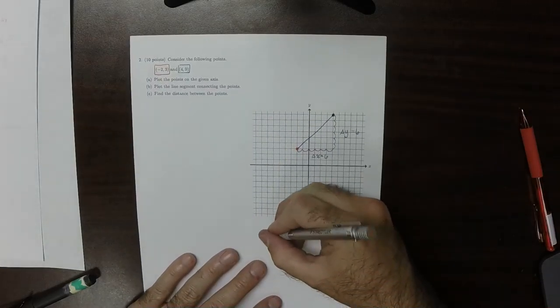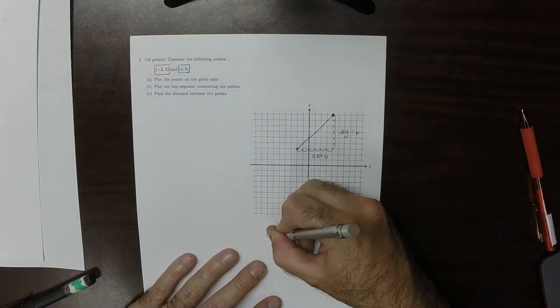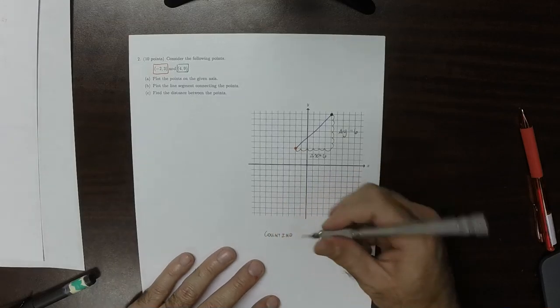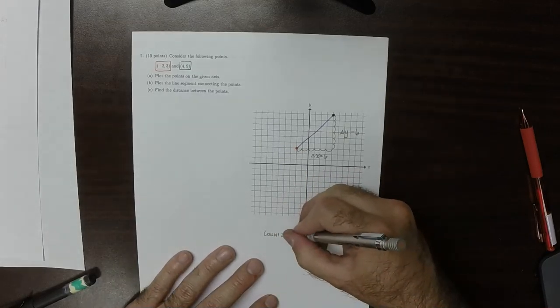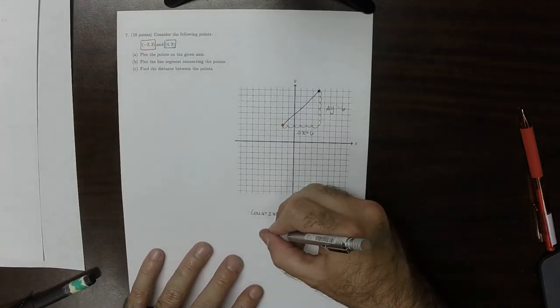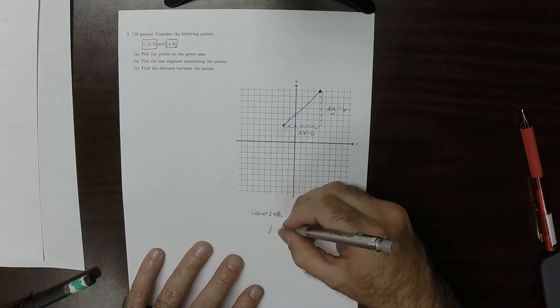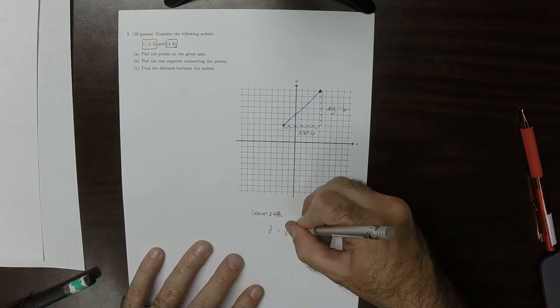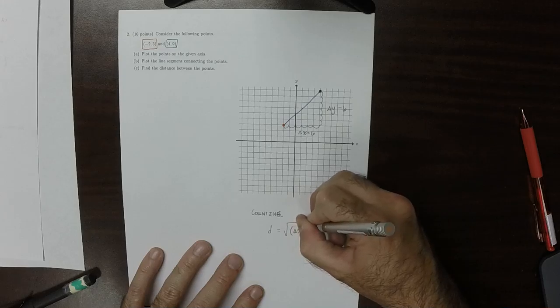So using the counting, just counting. By just counting, we can see that the distance should be the square root of the change in x squared.